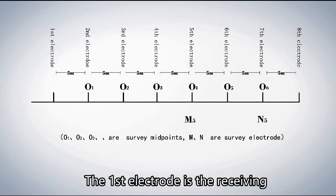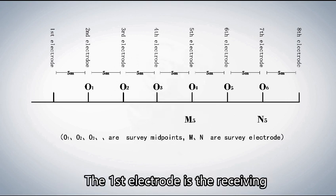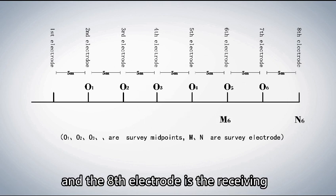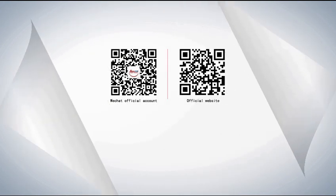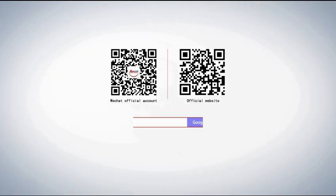The first electrode serves as the receiving M electrode for the first midpoint, and the eighth electrode serves as the receiving N electrode for the sixth midpoint.